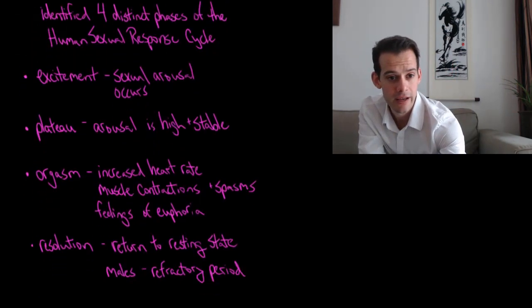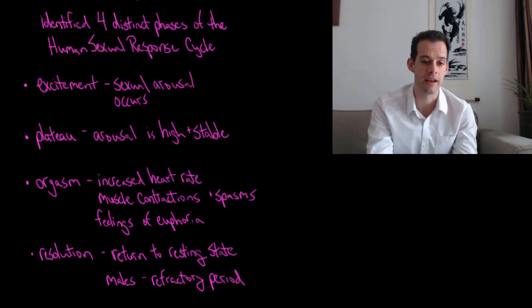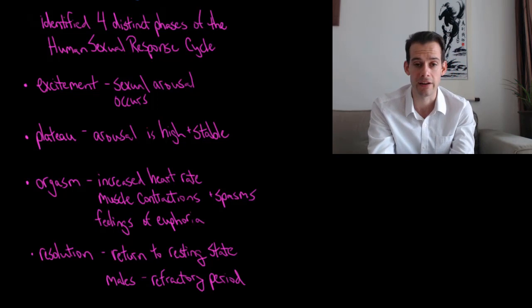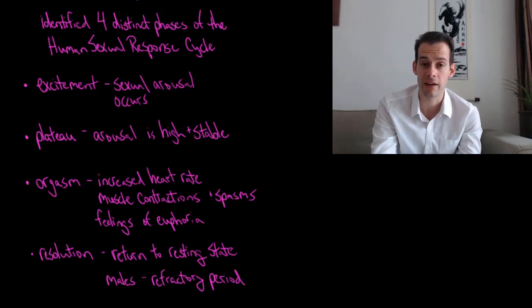The first stage is called the excitement stage, and this is where sexual arousal first begins to occur. We see an increase in heart rate, an increase in blood pressure, and an increase in blood flow to the genitals. In males this causes erections, and in females the vagina expands and begins producing lubricants.